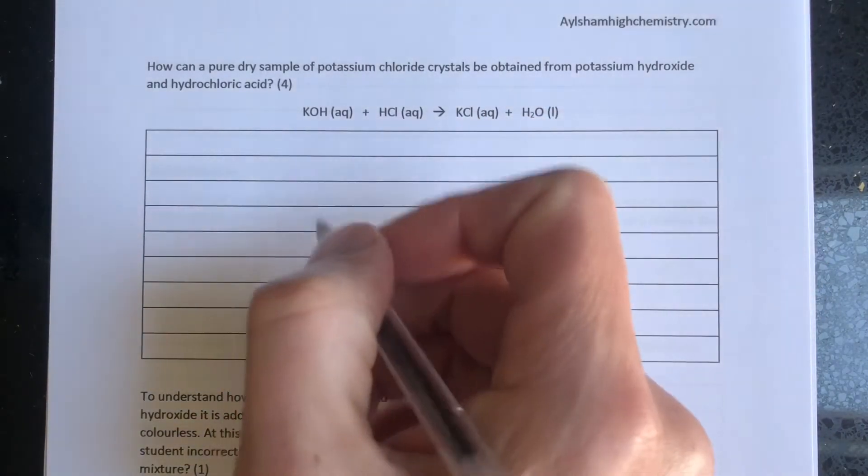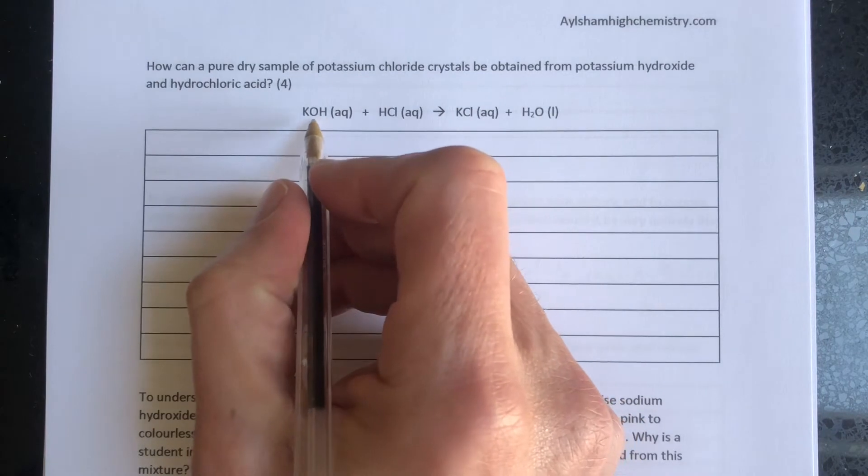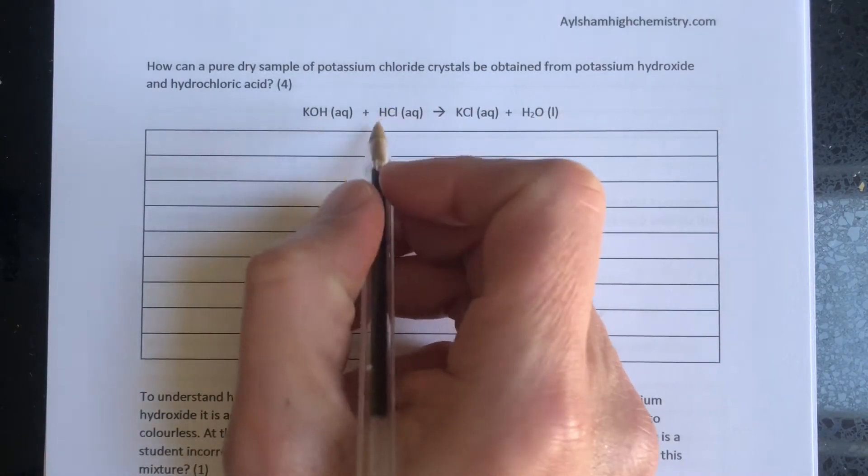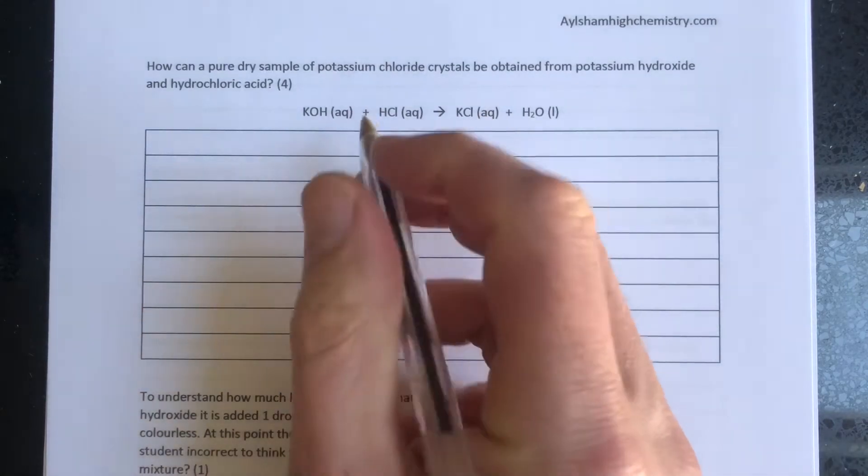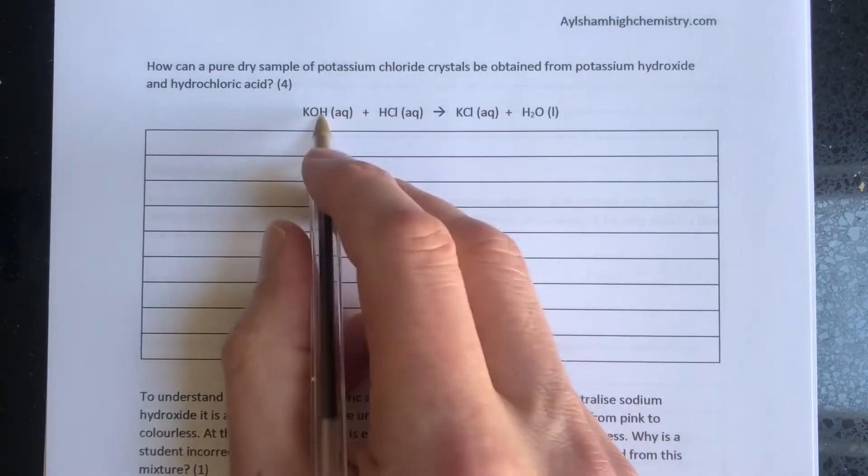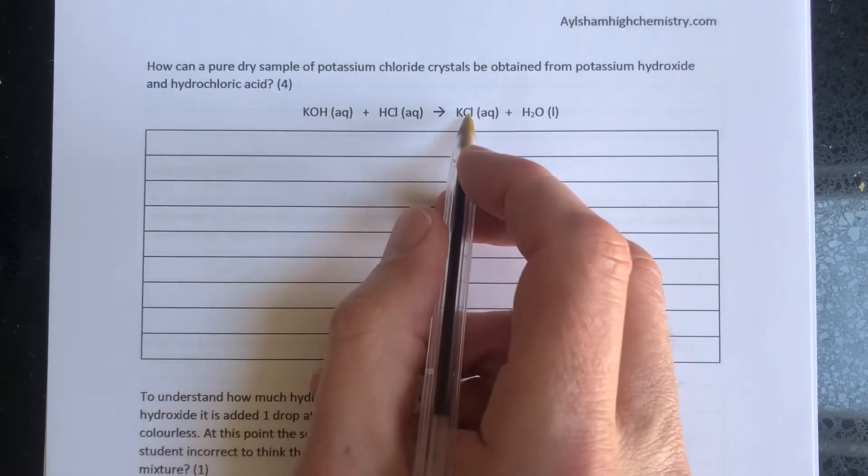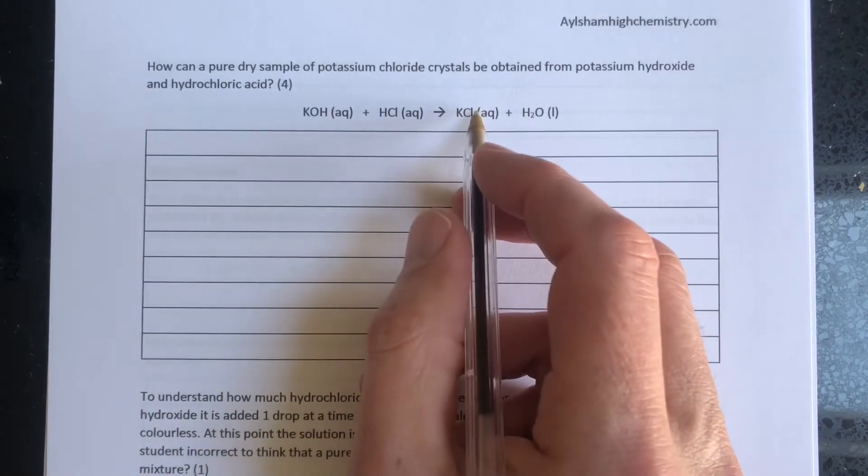So we need to react exactly the same amount of potassium hydroxide with exactly the same amount of hydrochloric acid, so we have neither reactant in excess. If either of these were in excess, that would make the product impure.